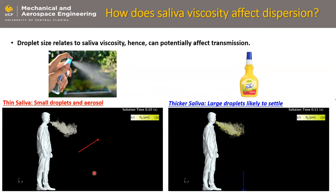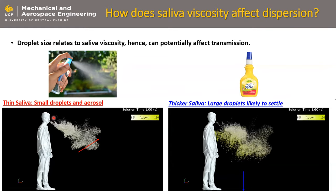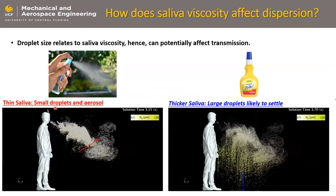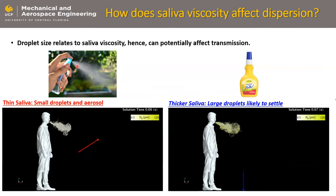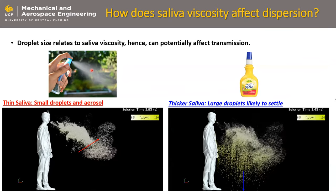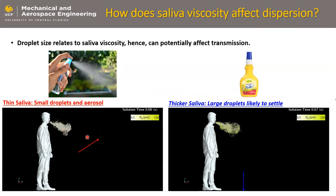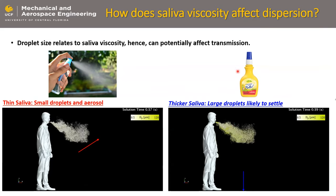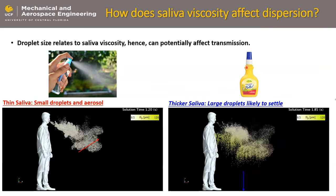Here are some results from our numerical simulations. This is thin saliva — conceptually like a spray bottle with water. It atomizes, breaks up into a lot of droplets, and basically spreads throughout a room. And this is what we're seeing in our simulations: these small droplets tend to float, loft, and aerosolize.